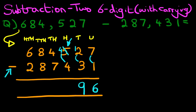We're now going to move on to the hundreds column: four minus four is zero. The thousands column: four minus seven — the number four is smaller than seven, so we have to take one from the digit to its left, which is eight. Cross out eight — eight minus one is seven — and the one we've taken we put to the right, so the thousands column now reads fourteen minus seven. Fourteen minus seven is seven.